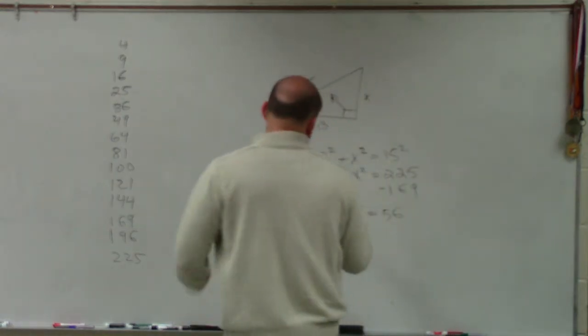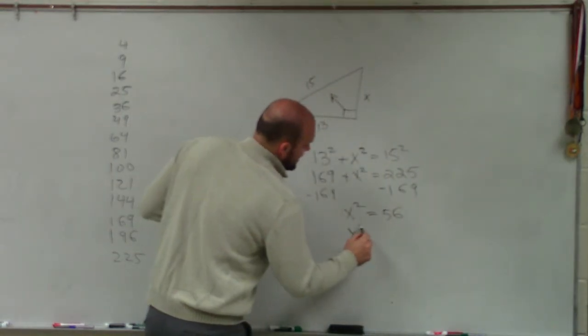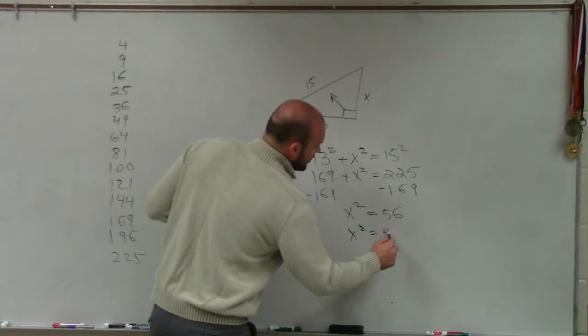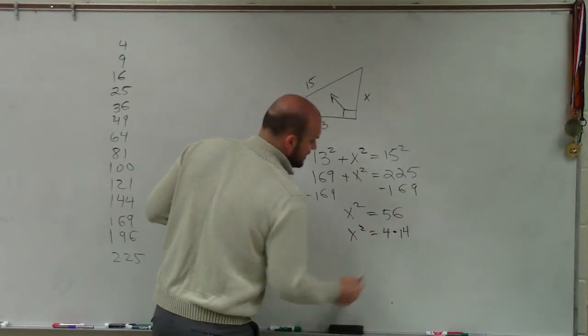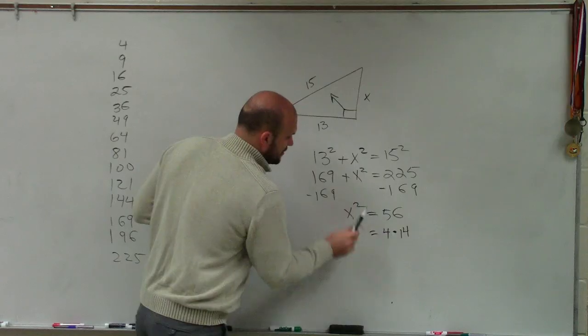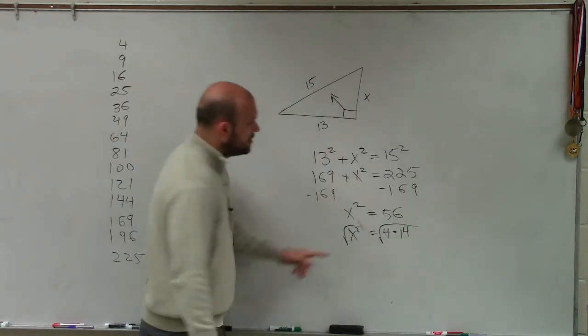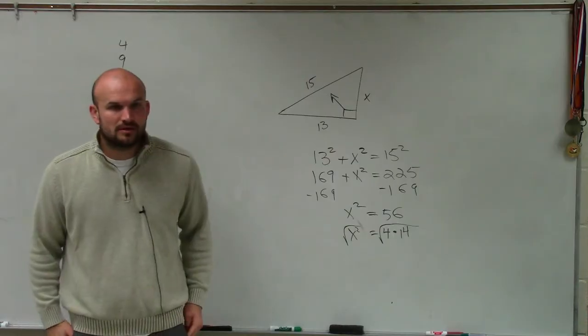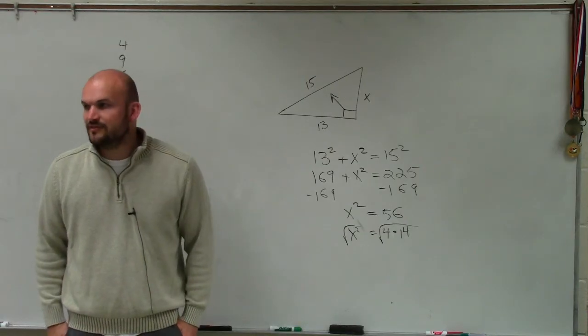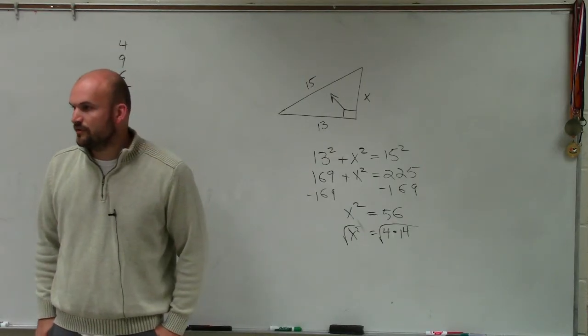So therefore, this divides into it 14 times. So I can say x squared equals 4 times 14. I'm sorry. Let's take the square root on both sides. So can I simplify the square root of 4? How can I simplify the square root of 4? I can rewrite the square root of 4 as...